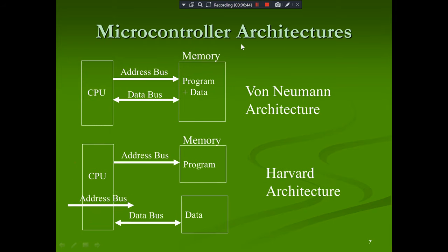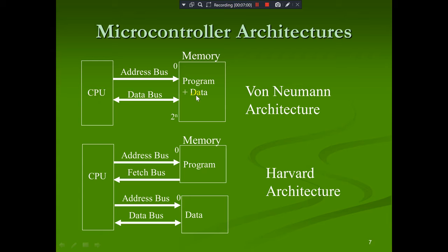Microcontroller architecture: there are two types — Von Neumann architecture and Harvard architecture. In Von Neumann architecture, the CPU is connected to a single memory where both data and program are stored together. The address bus connects the CPU to this memory, and a data bus carries information in both directions between the CPU and memory.